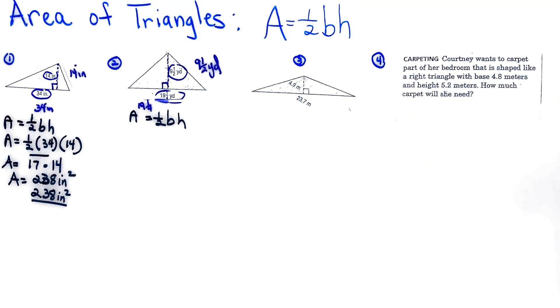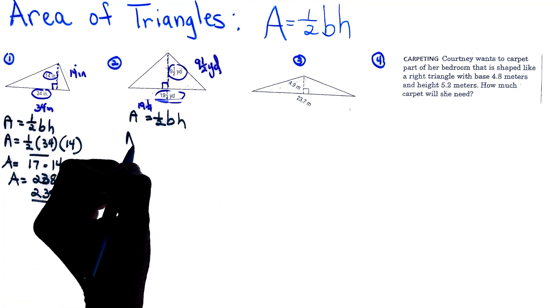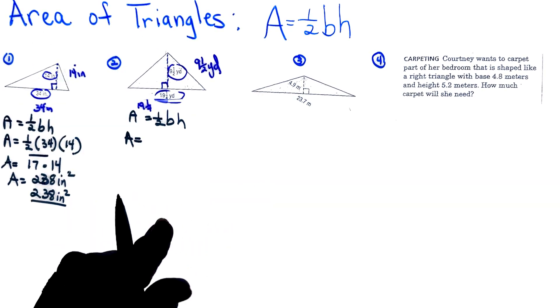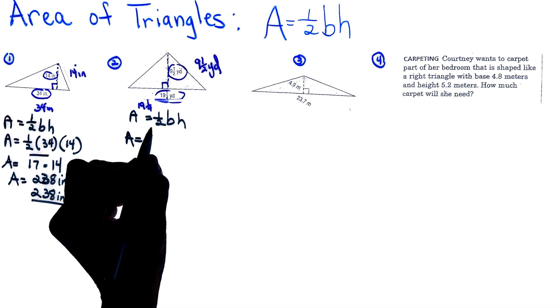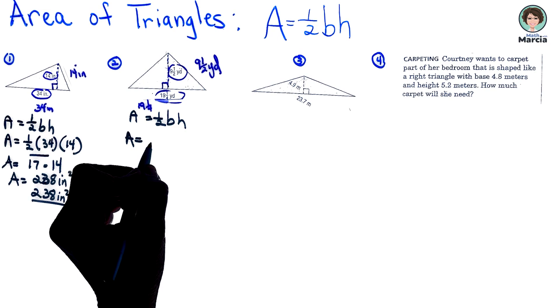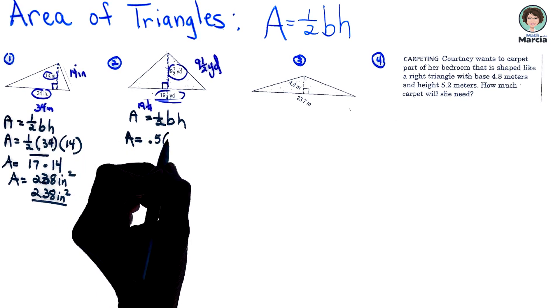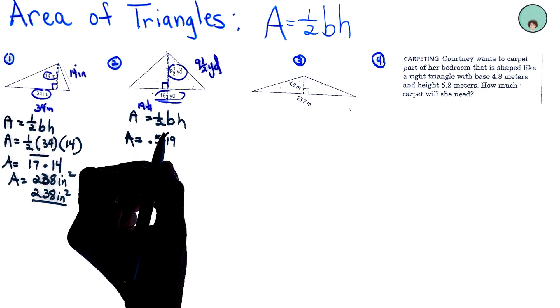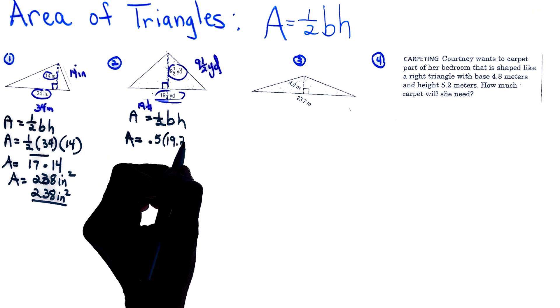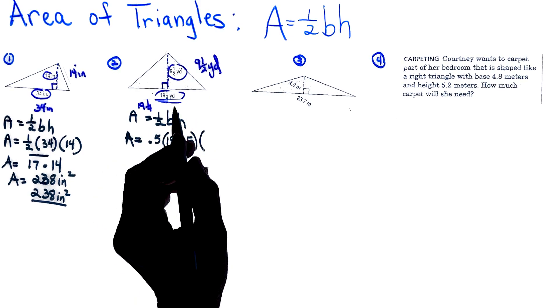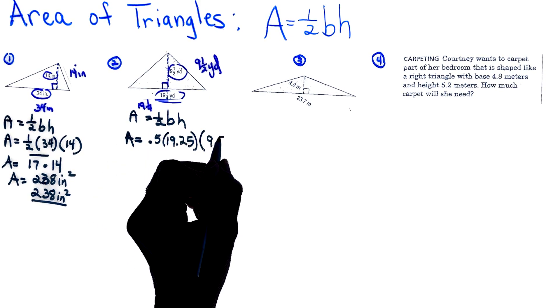Now I'm going to substitute the values into my formula. Area is equal to, and if I'm going to change everything else to a decimal, I think I'll change one-half to a decimal. So I know that that is 0.5. My base is 19 and one-fourth, which is 0.25, and then 9 and a half would be 9.5.